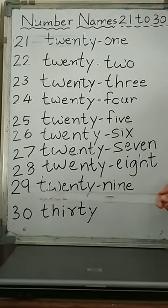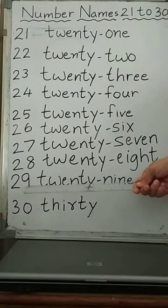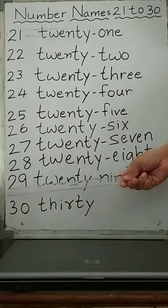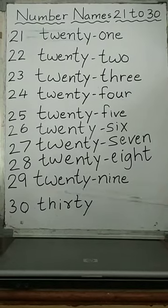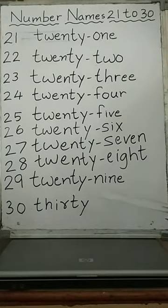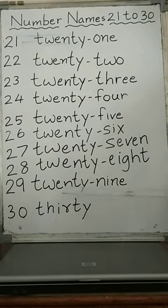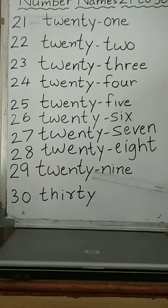Now, 29. Again, see here children, 9 is at 1's place and 2 is at 10's place. So the number name for this numeral is 29. Spelling of 29 is T-W-E-N-T-Y and spelling of 9 is N-I-N-E.